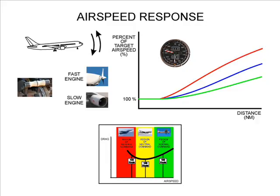Unlike the first five demonstrations, which plot flight path on an altitude versus distance graph, this demonstration plots percent of target airspeed versus distance, which allows all three command regions to be shown on the same scale. It compares the rate of airspeed change for pitch-only corrections and the power response of fast-responding engines and slow-responding engines in all three command regions. Pitch and power correction magnitudes are the same as in previous demonstrations and are approximately three times greater than normal operations in order to clearly show their effects.